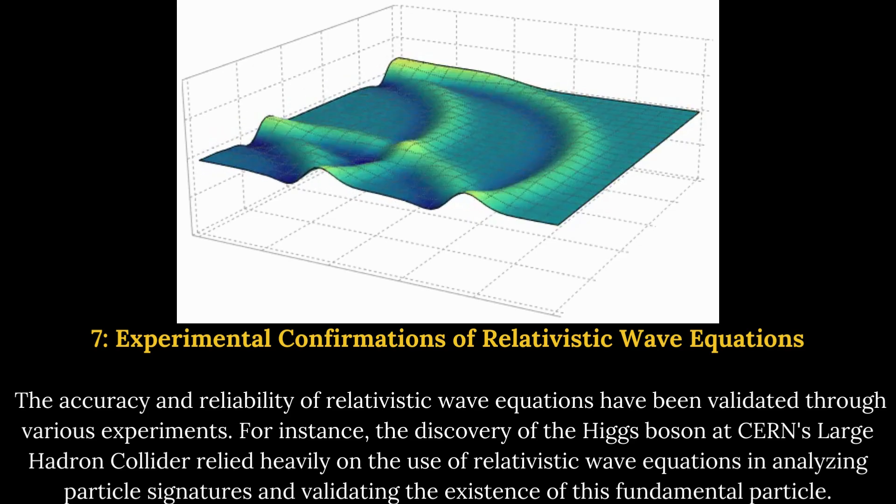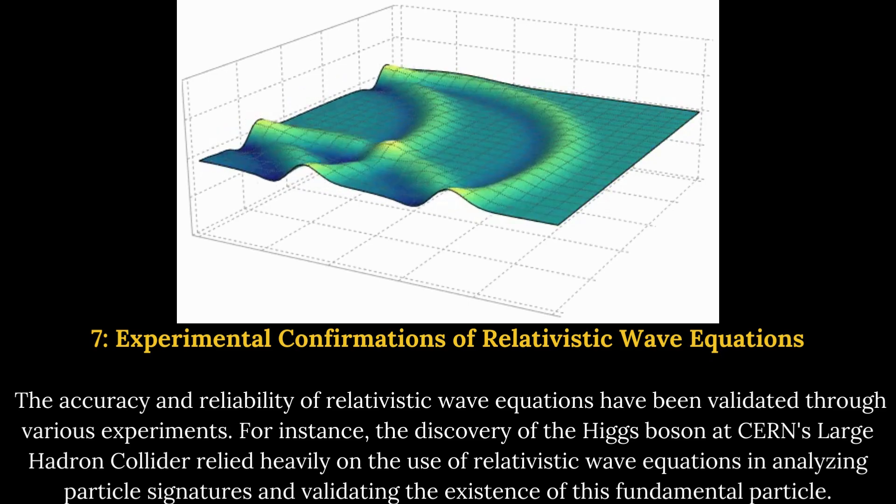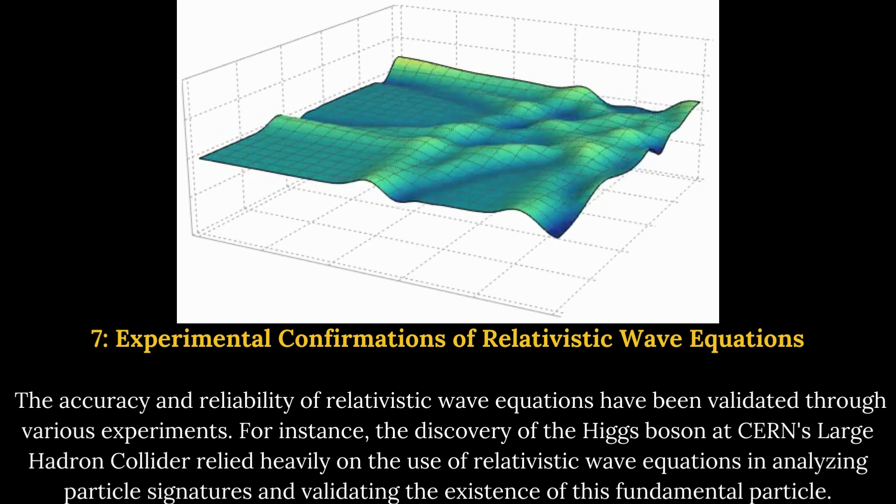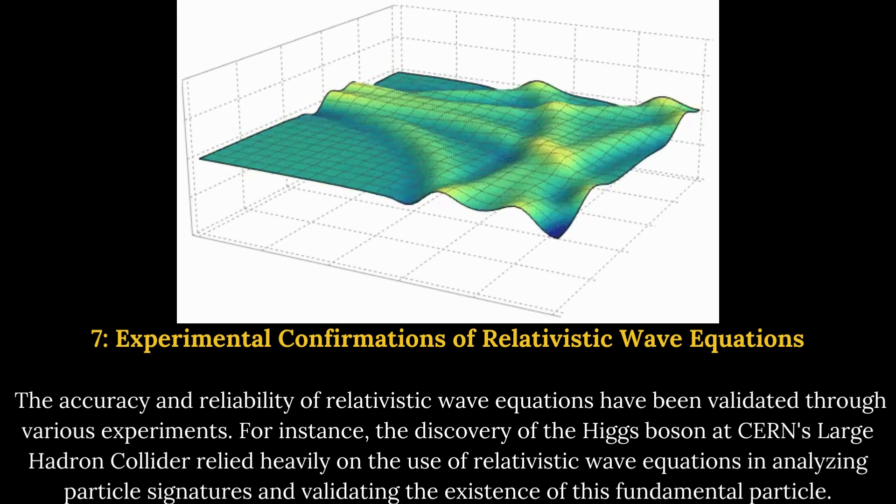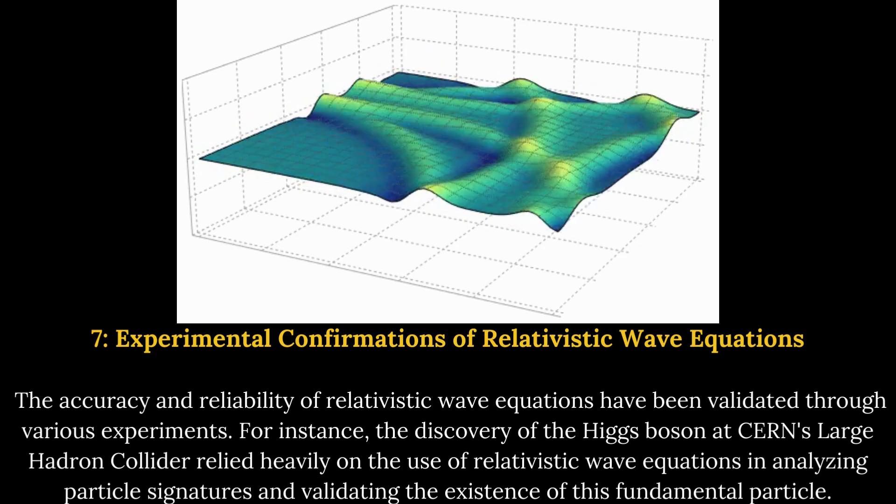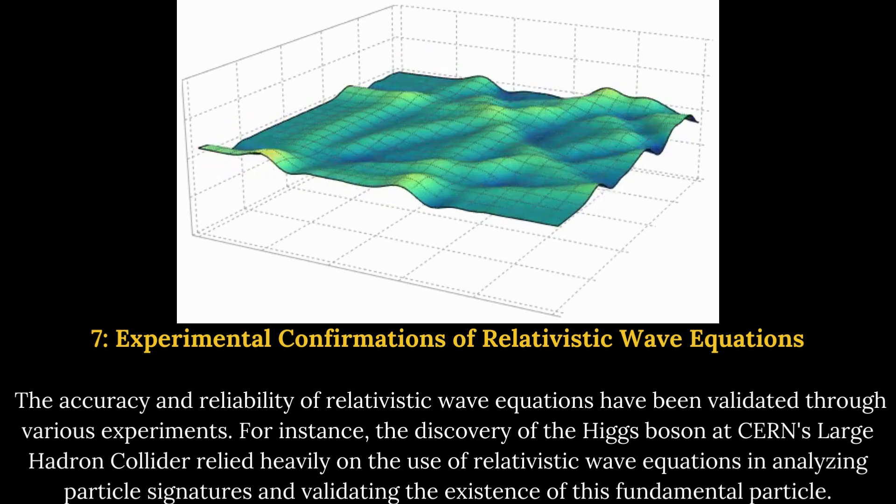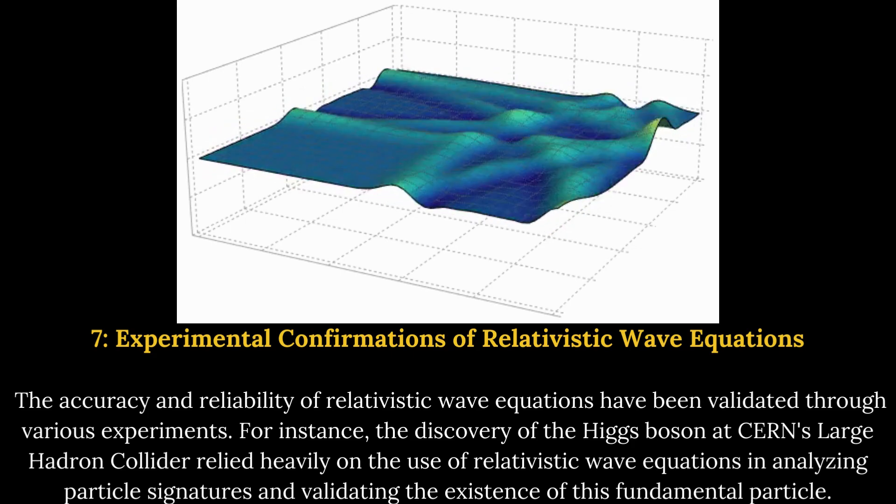7. Experimental confirmations of relativistic wave equations. The accuracy and reliability of relativistic wave equations have been validated through various experiments. For instance, the discovery of the Higgs boson at CERN's Large Hadron Collider relied heavily on the use of relativistic wave equations in analyzing particle signatures and validating the existence of this fundamental particle.